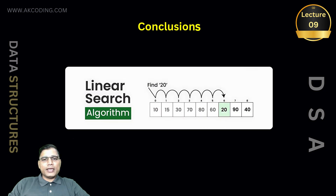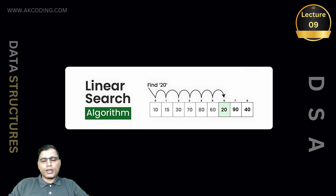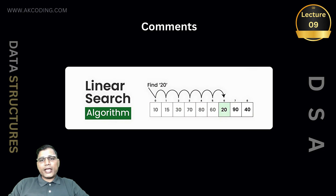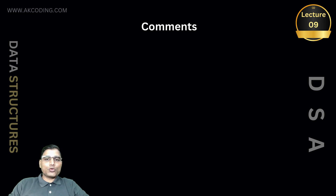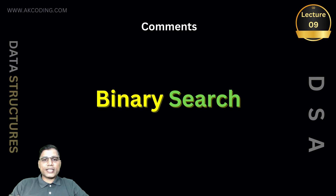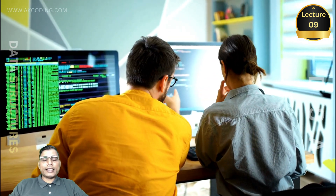In conclusion, linear search might not be the fastest or fanciest algorithm out there, but it is a reliable tool for small unsorted arrays. If you are just starting out or working on a simple problem, this is your go-to method. If you have any questions or doubts about linear search, drop a comment below. If you found this video helpful, don't forget to hit like and subscribe for more tutorials. Next up, we will dive into binary search and see how to speed things up with sorted arrays. Thanks for watching, and I will see you in the next video — until then, happy coding!